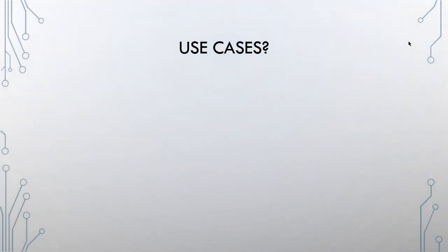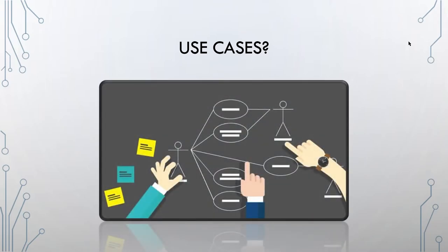The use cases in the white paper are not the functionalities of the AllianceBlock token — don't mistake it for that. We're going to talk about the AllianceBlock token soon in the next chapter, but now let's dive into the use cases of the whole protocol.